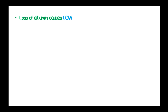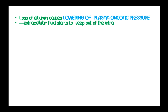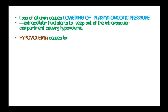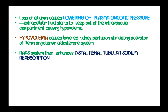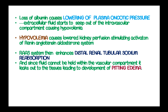Loss of albumin to urine causes hypoalbuminemia, lowering plasma oncotic pressure, making extracellular fluid seep out of the intravascular compartment causing hypovolemia. This hypovolemia causes lowered kidney perfusion, stimulating activation of the renin-angiotensin system. The RAS then enhances distal renal tubular sodium reabsorption. But since fluid cannot be held in the vascular compartment, it leaks out into the tissues leading to development of pitting edema.